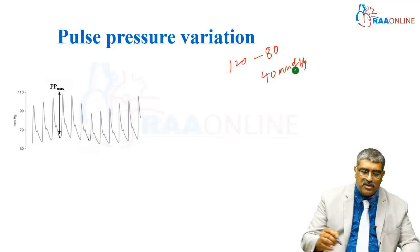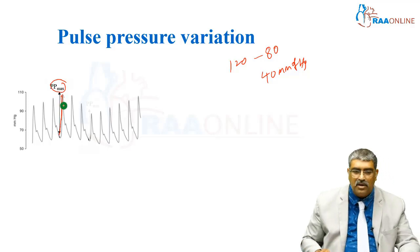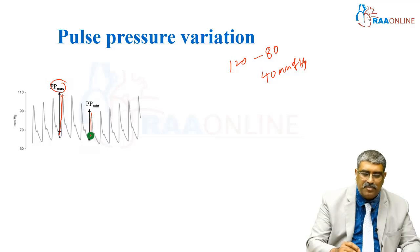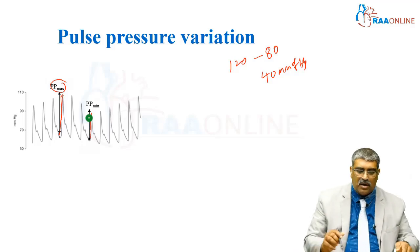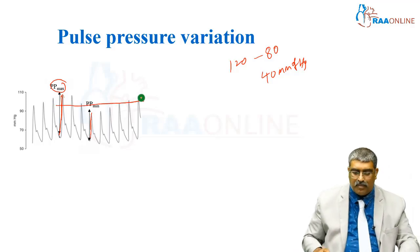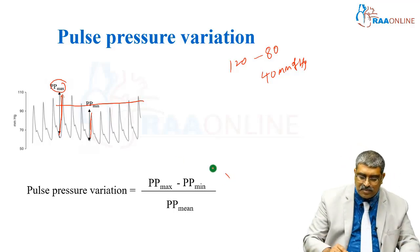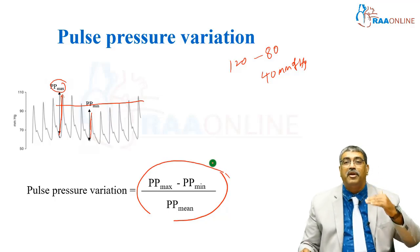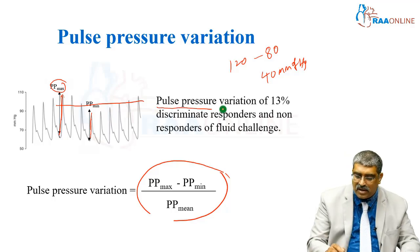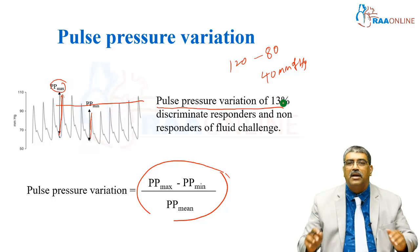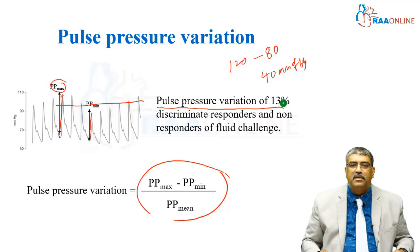What you do here is you measure the maximum pulse pressure and you measure the minimum pulse pressure. You also have a reference pulse pressure. So your pulse pressure variation is nothing but pulse pressure maximum minus pulse pressure minimum, divided by the mean pulse pressure. If the pulse pressure variation is greater than 30 percent, it discriminates responders from non-responders of fluid challenge.